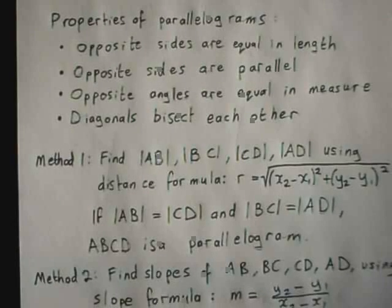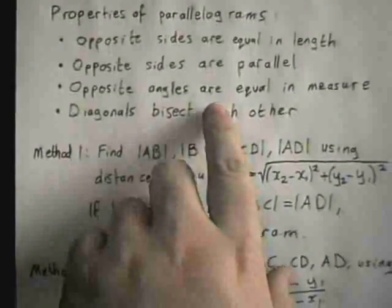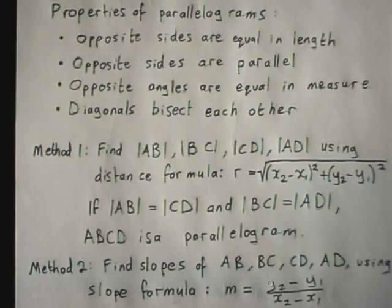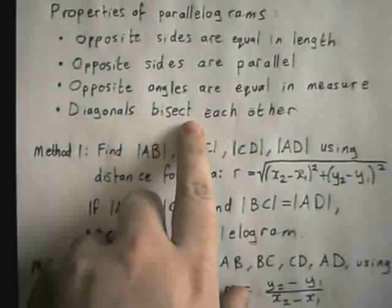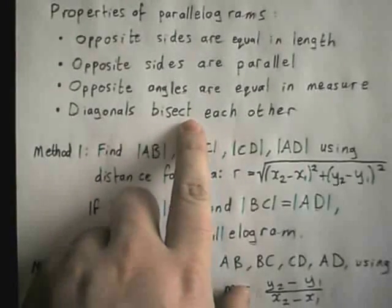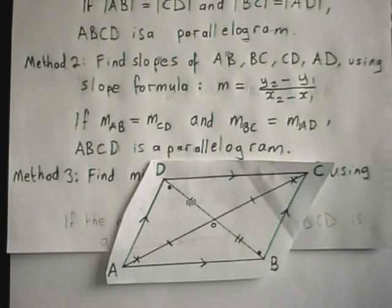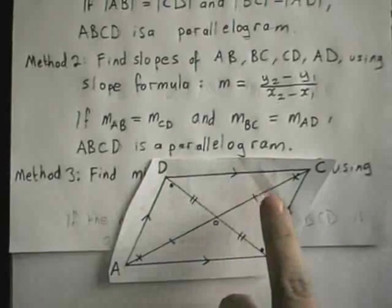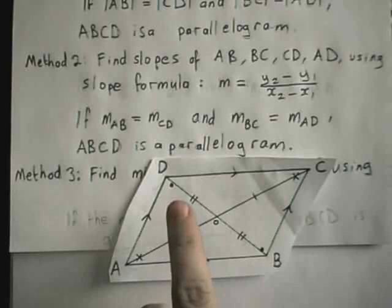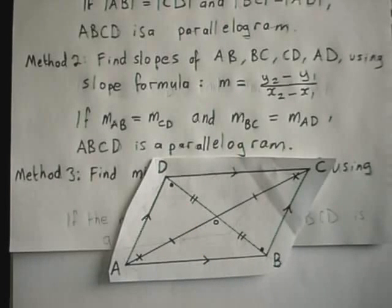For the third method, it's easy to think I'd use the third property — that opposite angles are equal in measure. But using coordinate geometry to measure those angles you'd have to measure all side lengths and start using sine and cosine rules, and by that stage we could have just used method one. So instead I'm going to use the fourth property: that the diagonals bisect each other. A side effect of this property is that if the diagonals bisect each other, those two diagonal lines share the same midpoint.